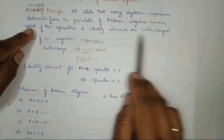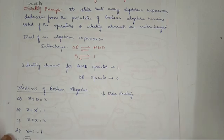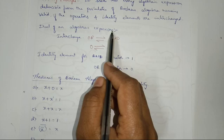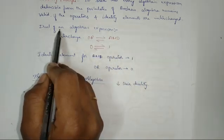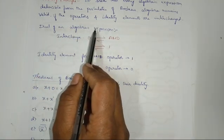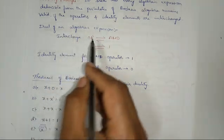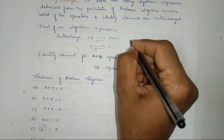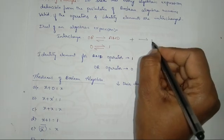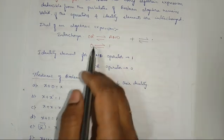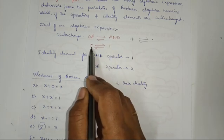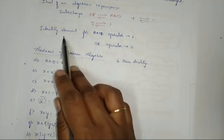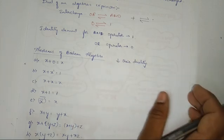Now, how to derive a duality of an algebraic expression? If any algebraic expression is given, to find the duality or to derive the dual of a given logical expression, what we need to do is: we have to interchange. If there are any OR gates, we should replace it with AND gate. If it is any AND gate, replace it with OR gate. If any 0 is there, replace it with 1. For 1, you have to replace it with 0. Next, identity element for AND operation is 1, and the identity element for OR operation is 0.